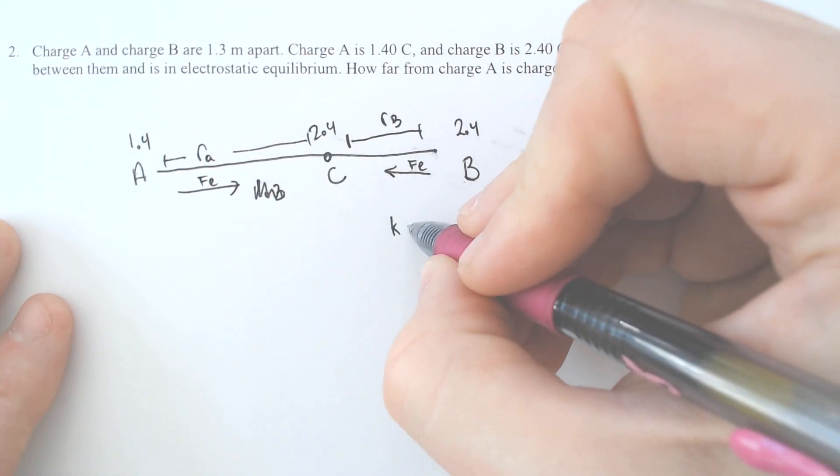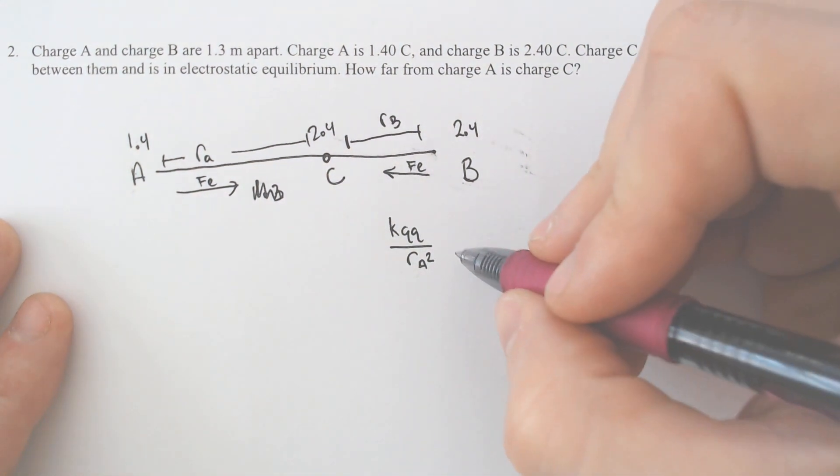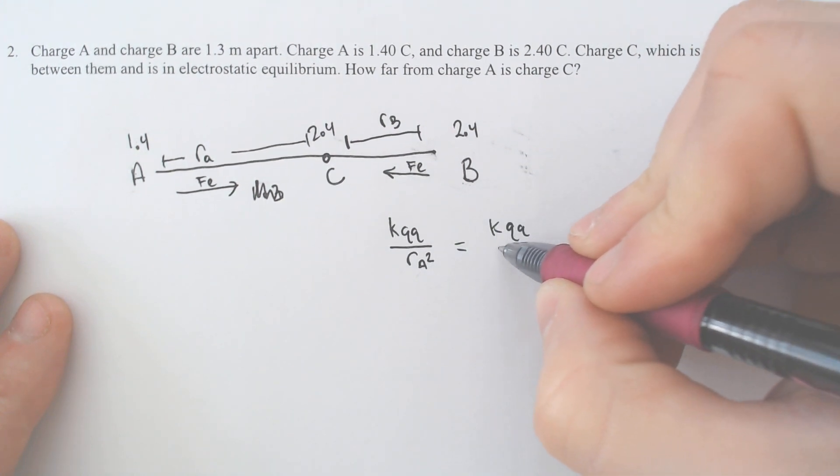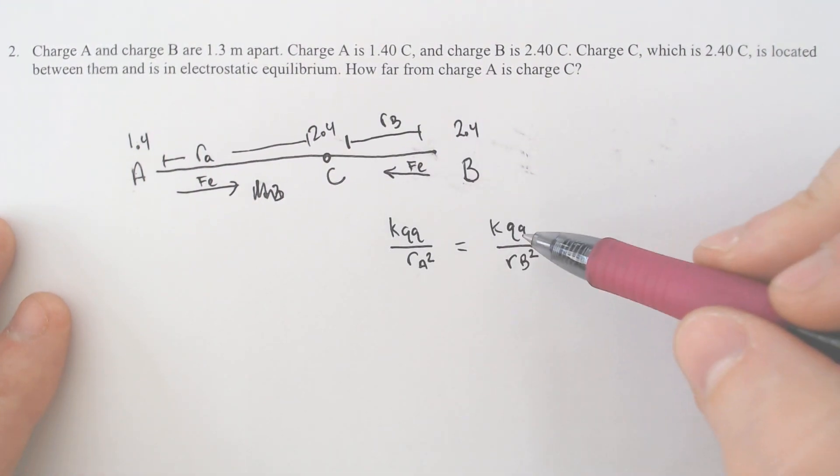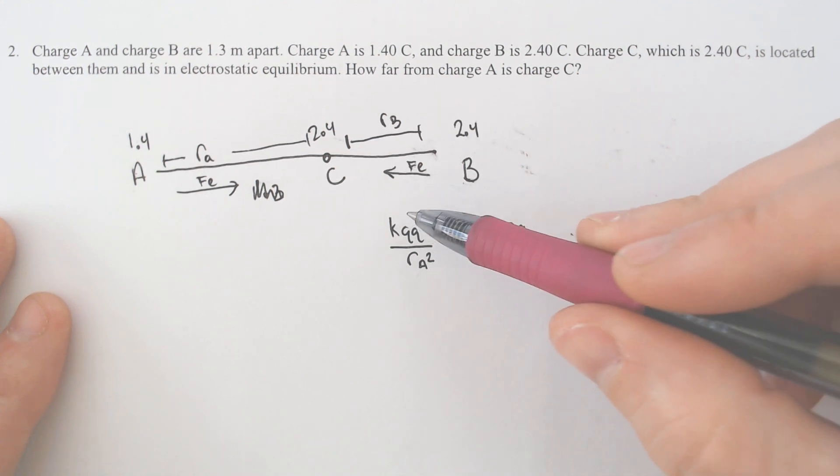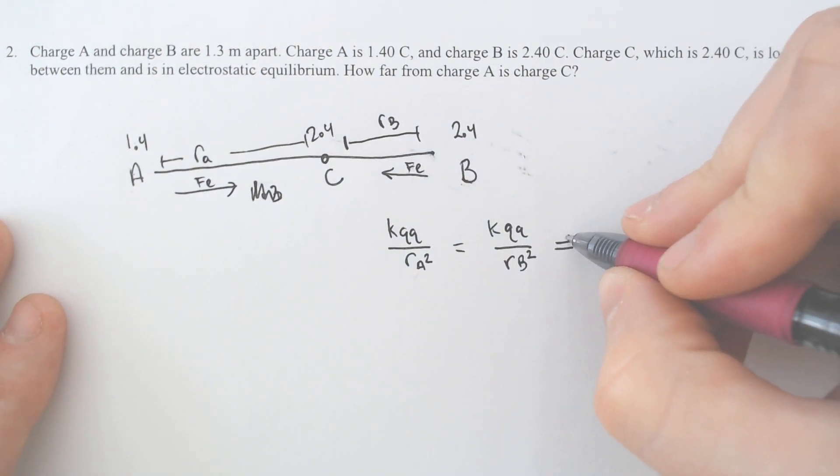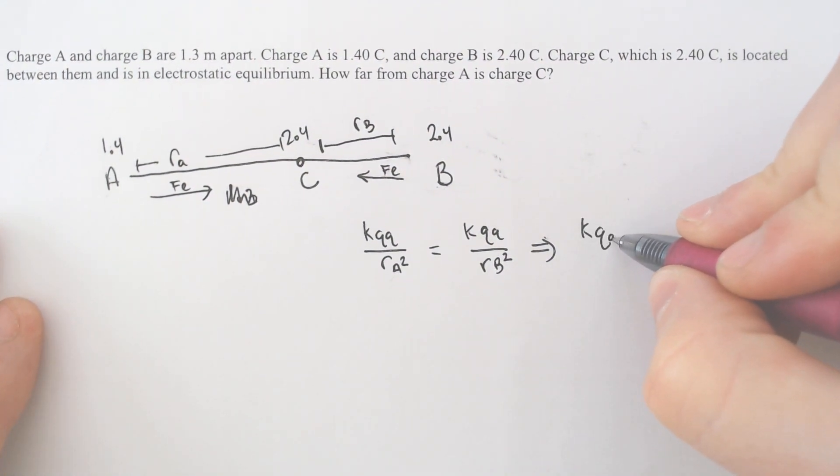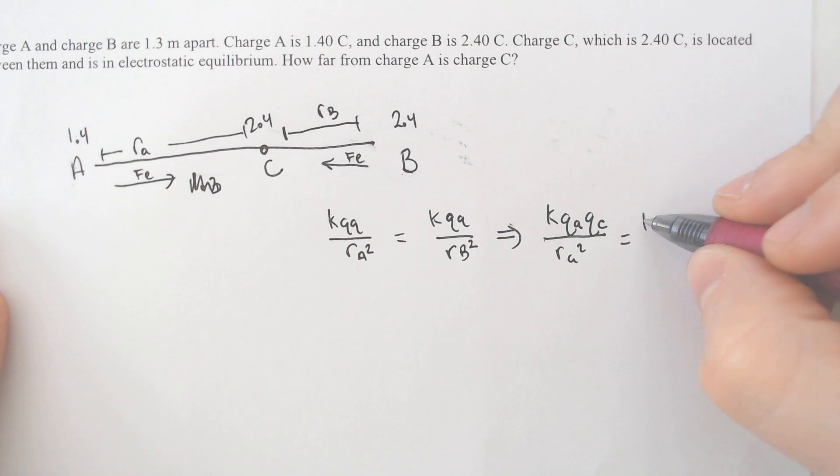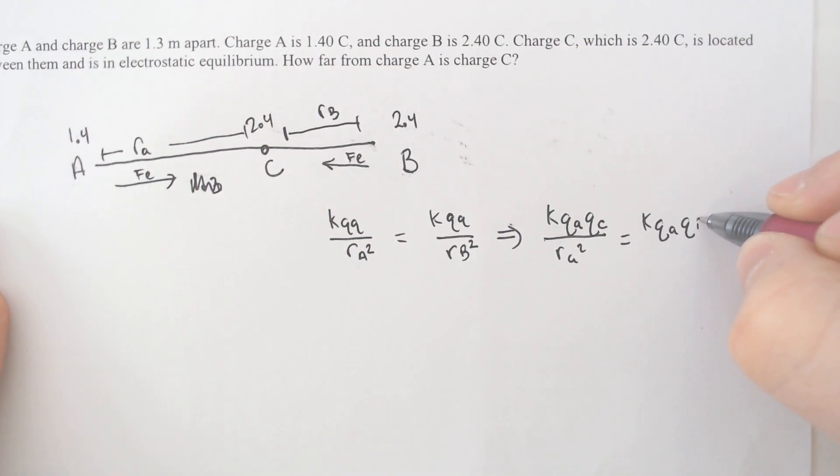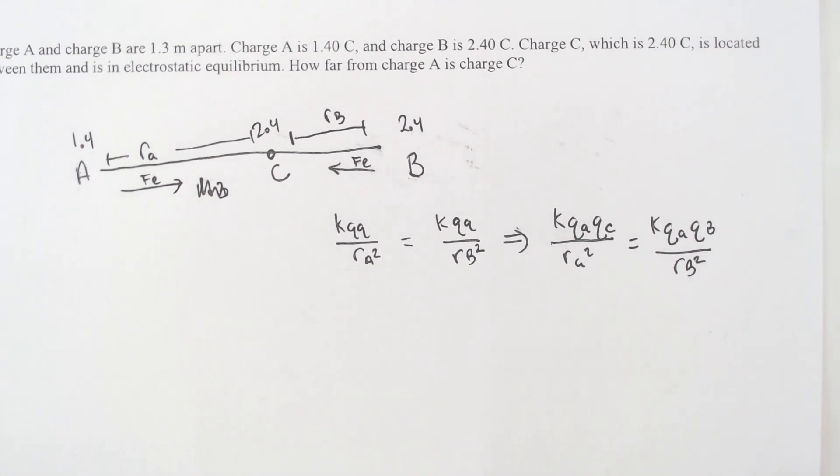So in order to do that you're going to have K Q Q over R of A squared would have to equal K Q Q R of B squared. So we're going to fill in some of the things. But before we do I want to recognize that a lot of stuff is going to cancel. So if we did fill this in we'd have K Q of A Q of C and R A squared and that would equal K Q of B Q of C R of B squared.